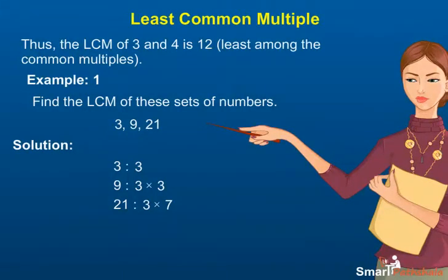Example 1. Find the LCM of these sets of numbers: 3, 9, 21. Solution. List the prime factors of each. 3: 3. 9: 3 into 3. 21: 3 into 7.